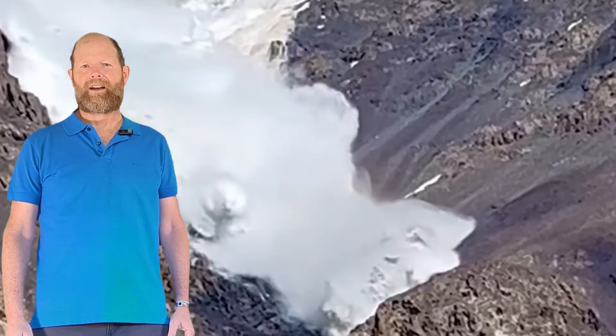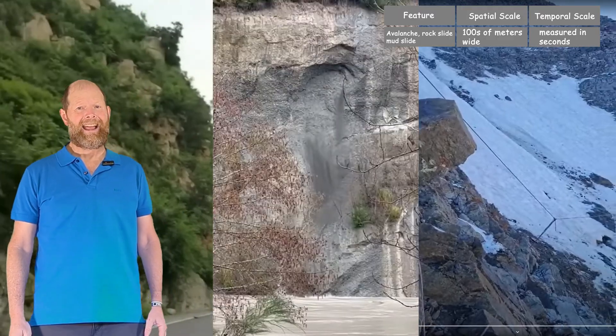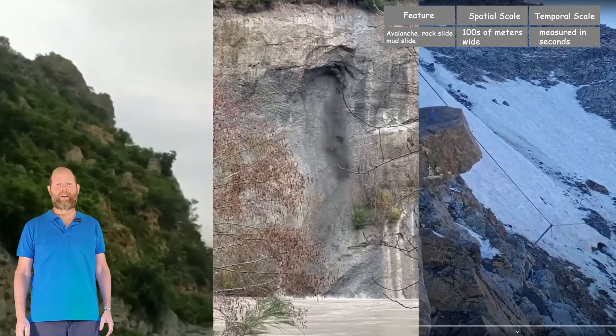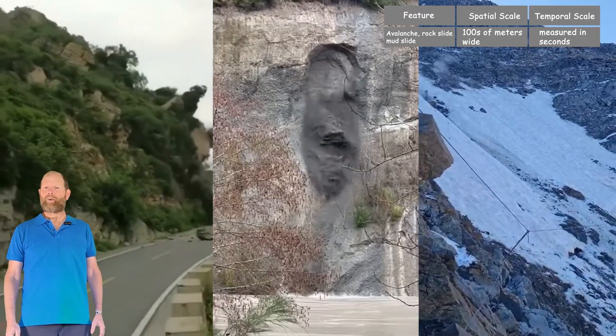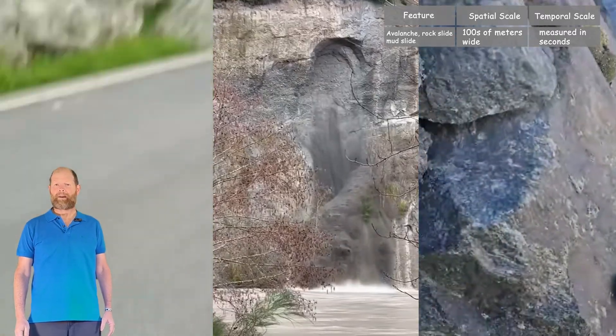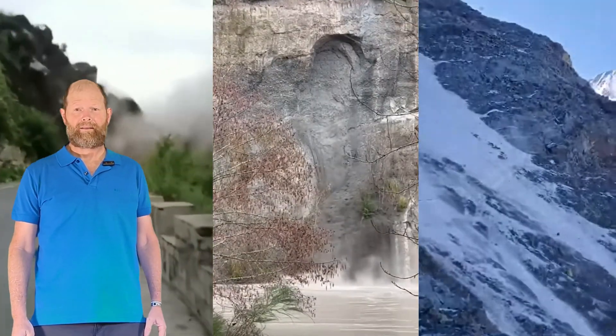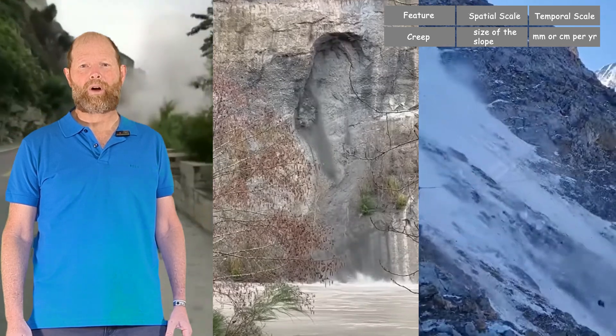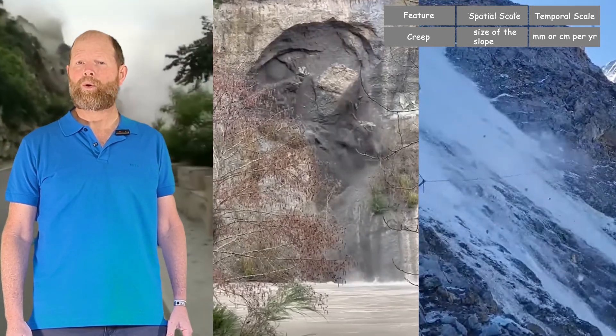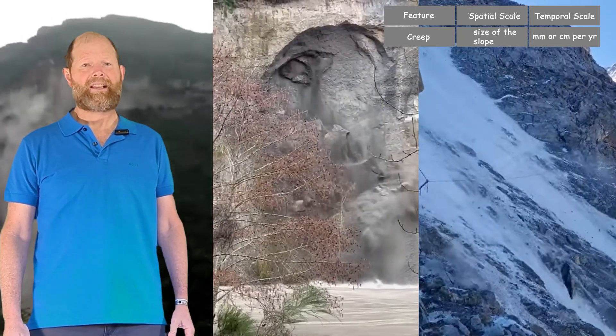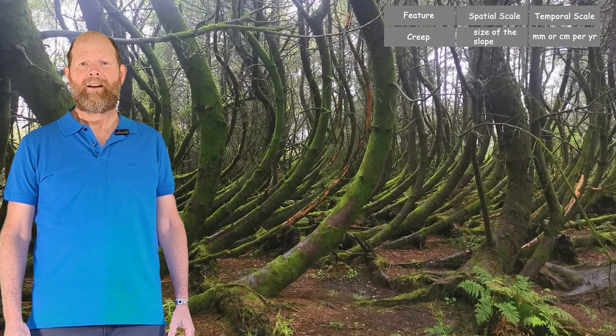Mass wasting, on the other hand, is much quicker. Mass wasting refers to gravity pulling rock and soil down a slope. This would include things like avalanches, rock slides, and mudslides, which happen very quickly, although it can also happen more slowly in a process called creep. Creep is the slow shifting of dirt and rock under the pull of gravity toward the bottom of a slope. This can result in tilted trees, poles, or buildings.